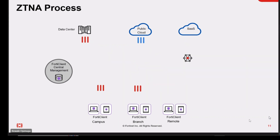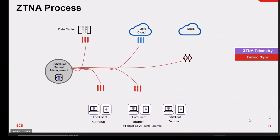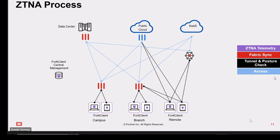Fortinet's ZTNA process begins when the user attempts to access an application. The user's device first connects to the FortiClient ZTNA agent, which is a lightweight software client installed on the user's device. The FortiClient ZTNA agent then authenticates with the access proxy, which is a server deployed at the perimeter of the network. The access proxy checks the user's identity and authorization to access the application.